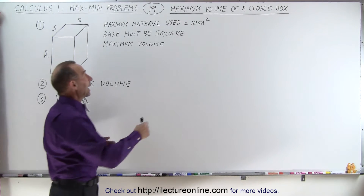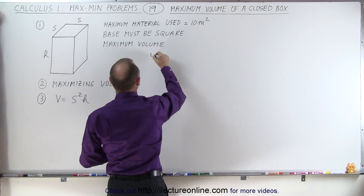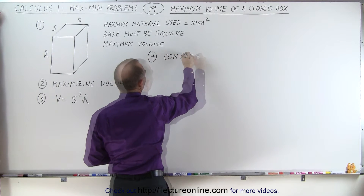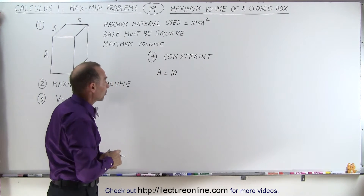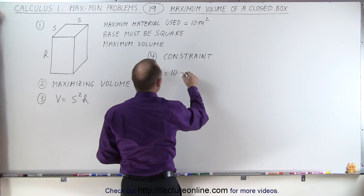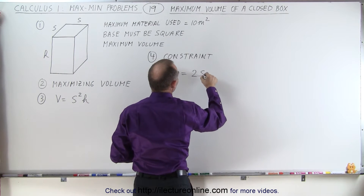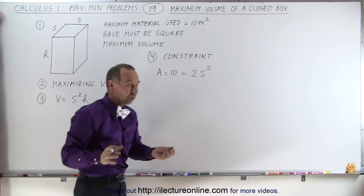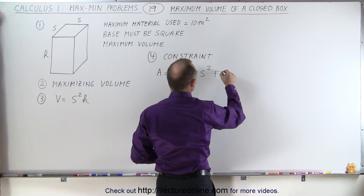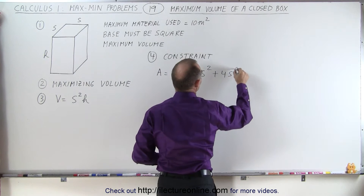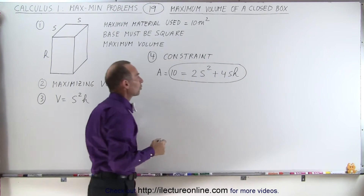Step four, the constraint is that the total surface area cannot exceed 10 square meters. Assuming we use the maximum material allowed, the area equals 10 m². The area of the box is the area of the bottom plus the area of the top — both are S squared, so that's 2S². Plus the area of the four sides: four times S times H, giving 4SH. So the constraint is: 10 = 2S² + 4SH.